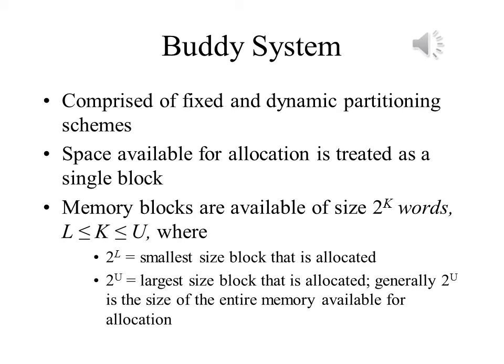To begin, the entire space available for allocation is treated as a single block of size 2^u. If a request of size s, such that 2^(u-1) is less than or equal to s times 2^u, is made, then the entire block is allocated.